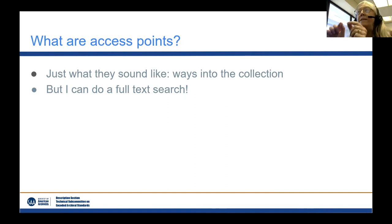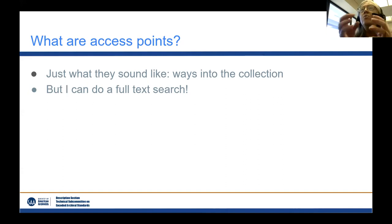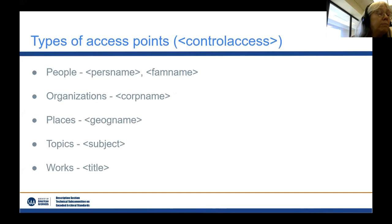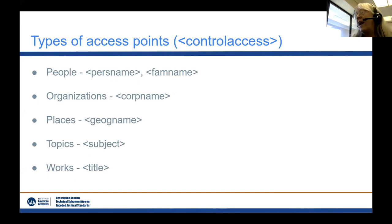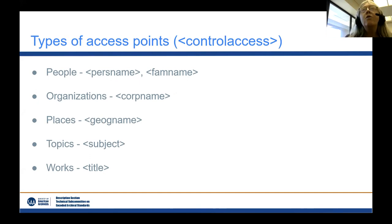By calling out specifically the phrase 'green building' as an access point, it enables a search engine to more tightly focus on what you want and give you better search results. When you're thinking about access points, it's also important to think about the type of access point. For example, the word 'Geneva' could be a person, a place in Switzerland, or a document like the Geneva Convention. By identifying the type of access point, we're making it possible to zero in better on those search results.